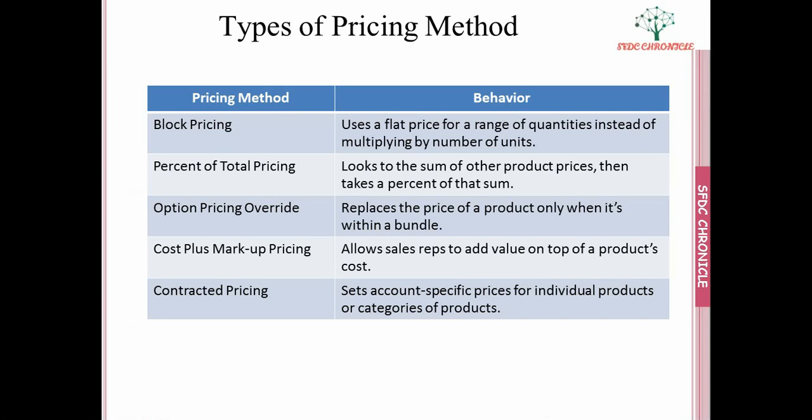The fourth pricing method is cost plus markup pricing. We can define a cost for a particular product — say $20 — and give the sales rep the ability to provide a markup on that cost so they can sell it at $25 or $26, whatever they want. We can do this via cost plus markup pricing.